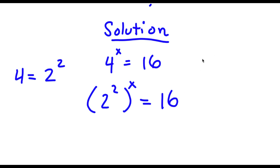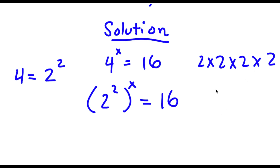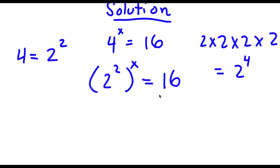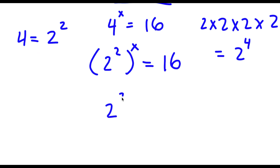Well, 2 times 2 is 4, 4 times 2 is 8, and 8 times 2 is 16. So we have four 2s, meaning this is the same thing as 2 to the power of 4. So now I have 2 squared to the power of x is equal to 2 to the power of 4.